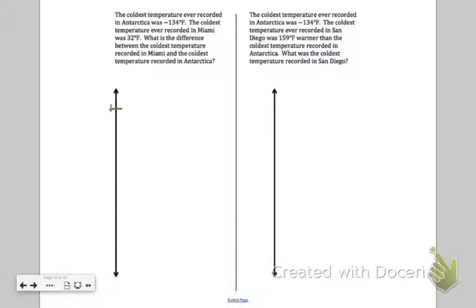So first, I have Miami, which was 32 degrees. And I have Antarctica, which is negative 134 degrees. Now when I deal with these problems, I always want to be aware of where 0 is. So in this case, 0 would be somewhere around here, definitely a lot closer to the 32 than the negative 134.